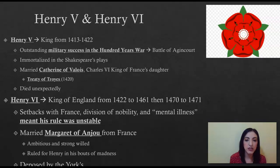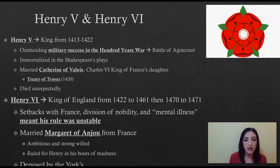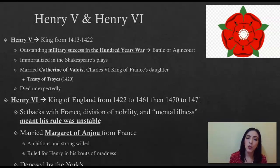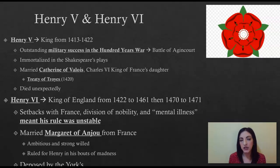Henry VI is king of England from 1422 until 1461, and then again from 1470 until 1471 — he was overthrown at one point, which explains the gap. Henry VI is very similar to Edward II in the sense that he did not want to be king. He would have much rather been a monk, priest, or scholar. He didn't want to be concerned with politics. His reign is marked by division of nobility, some setbacks with France, and periods of what we might identify as mental illness and instability. He would leave all matters up to his wife, Margaret of Anjou, another princess of France.